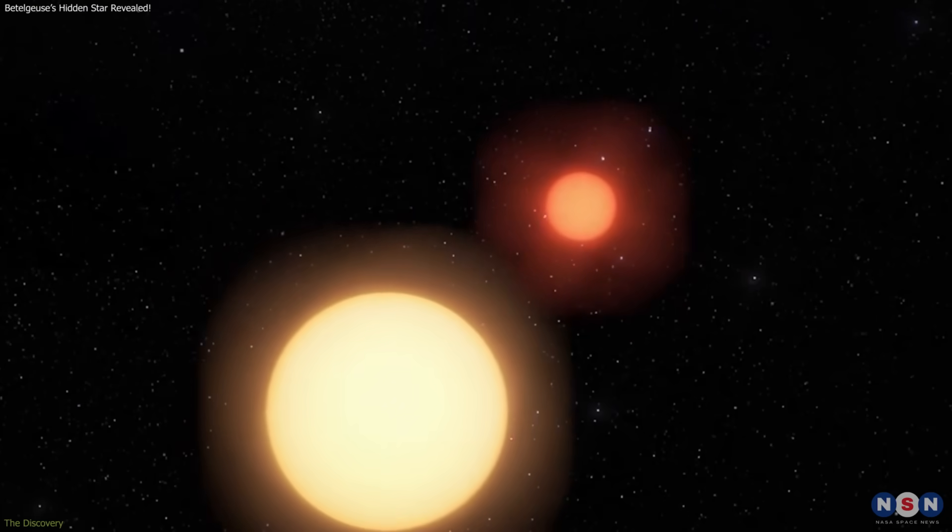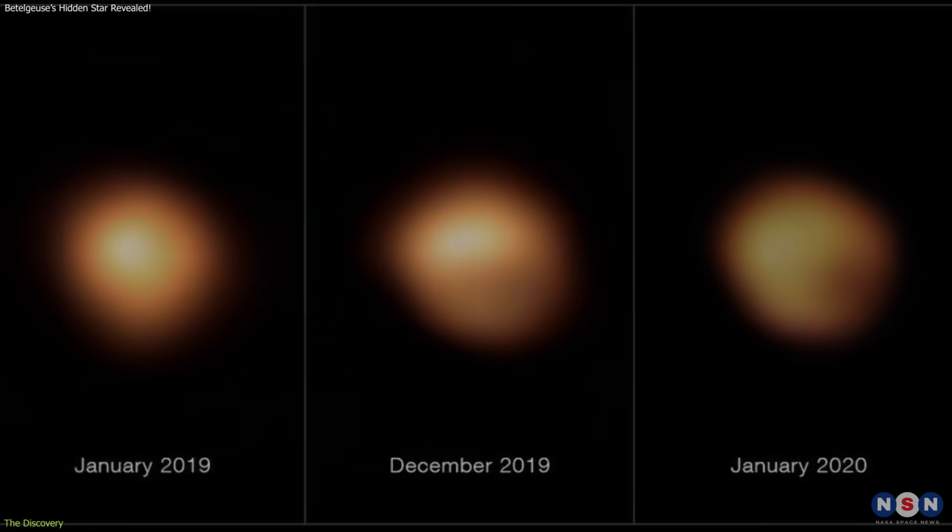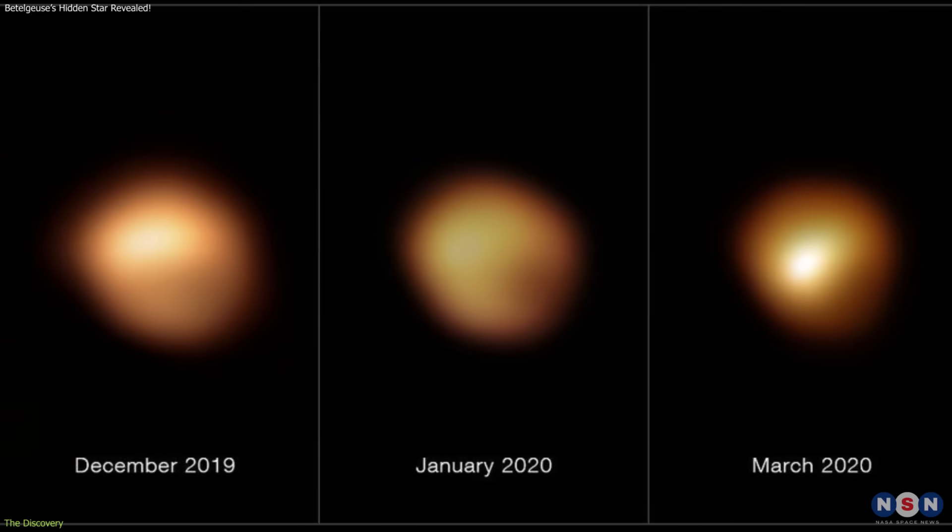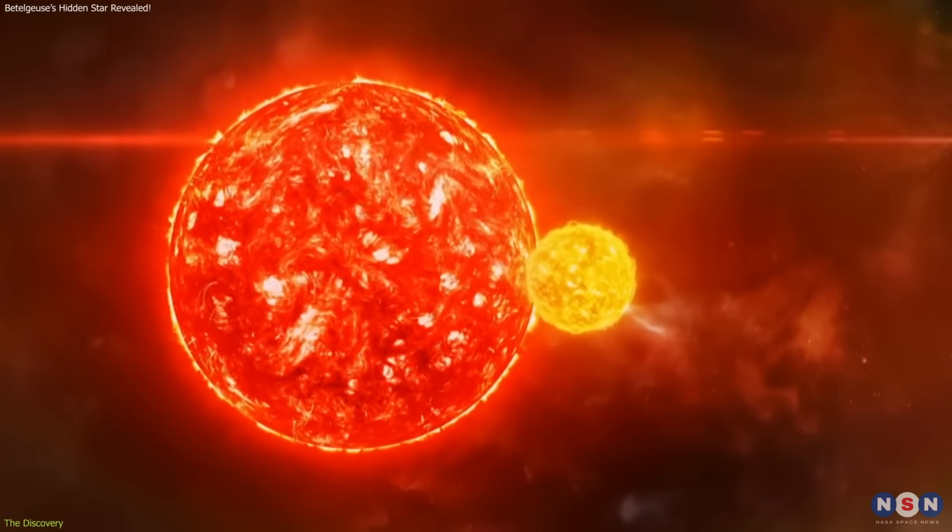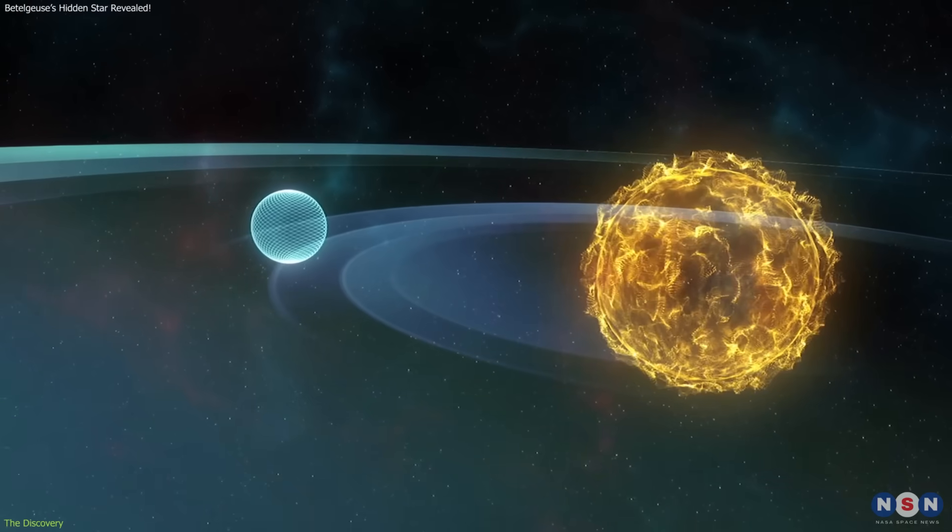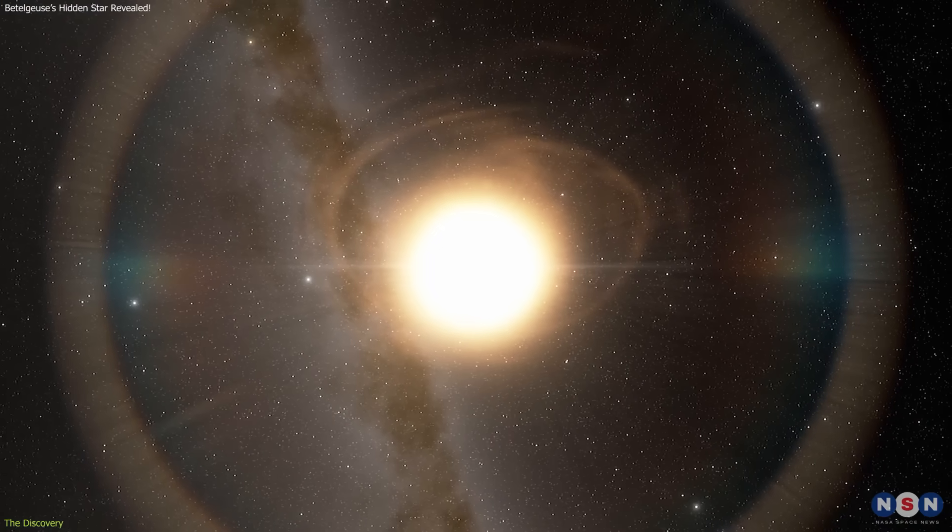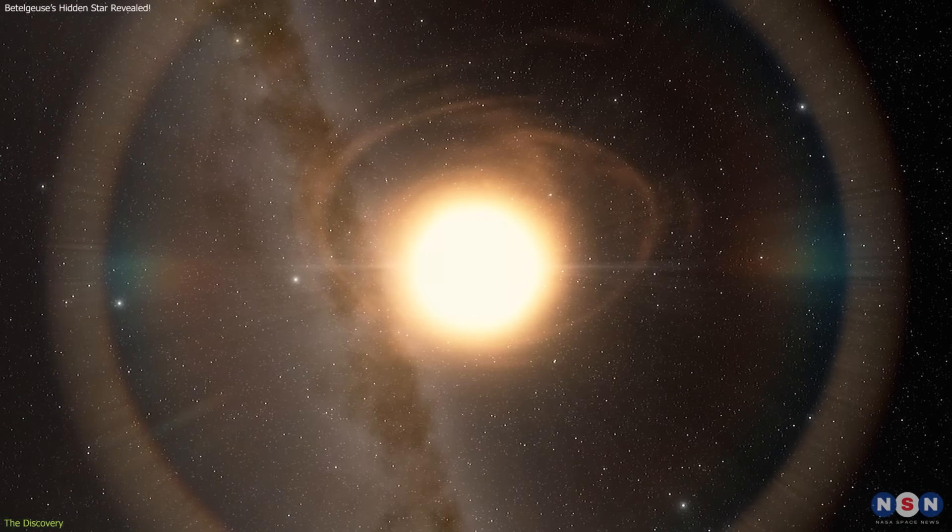Hints of a hidden partner have surrounded Betelgeuse for decades. Its unusual brightness changes, beyond the expected pulsations of a red supergiant, suggested the presence of a gravitational influence. Astronomers modeled the possibility of a companion, but the giant's brilliant glare and extended atmosphere made direct detection nearly impossible.